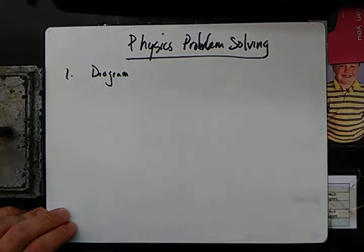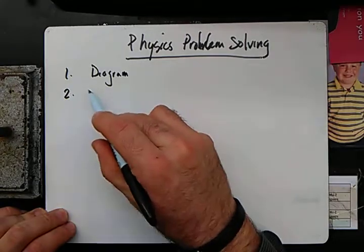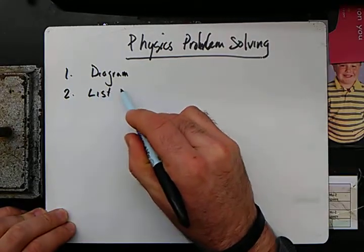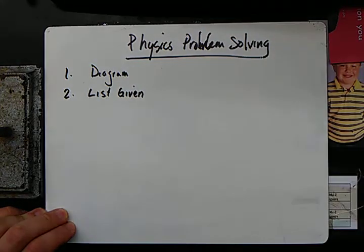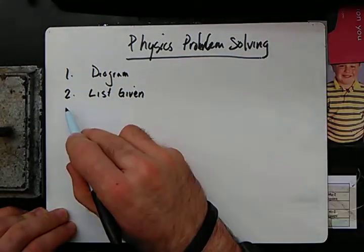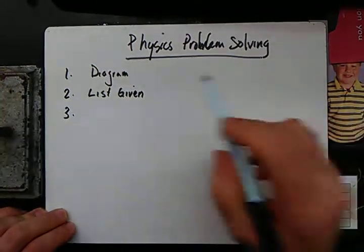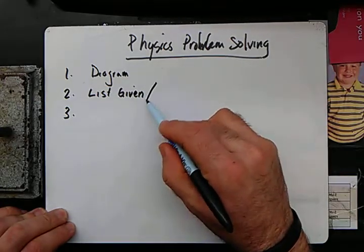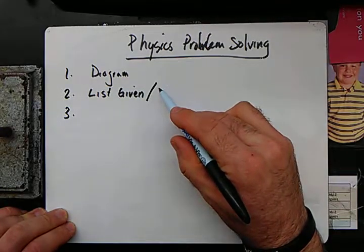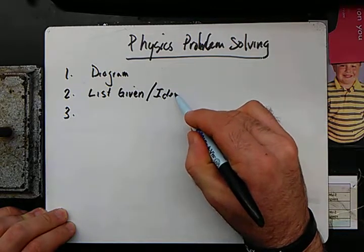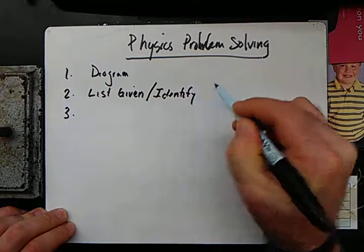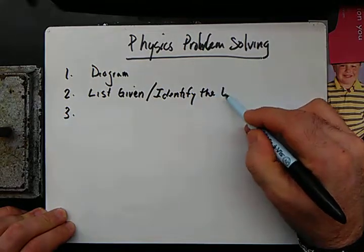Diagram. List the given information. We'll actually say list the given and then identify the unknown.